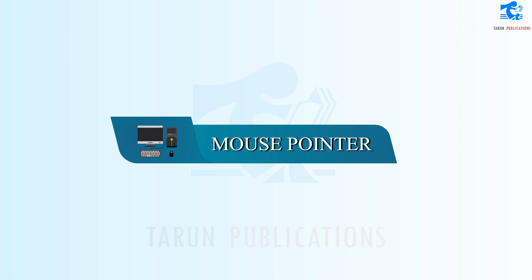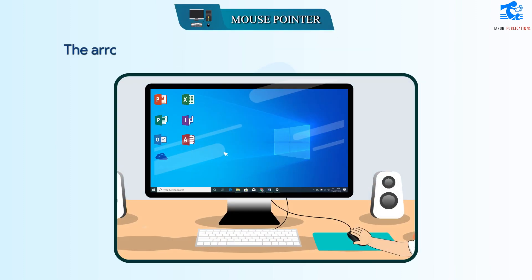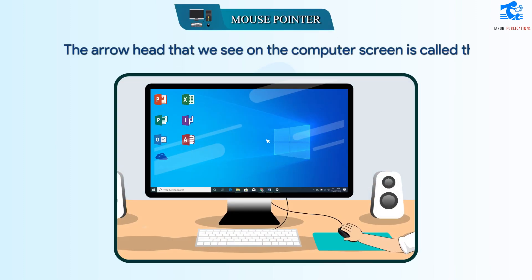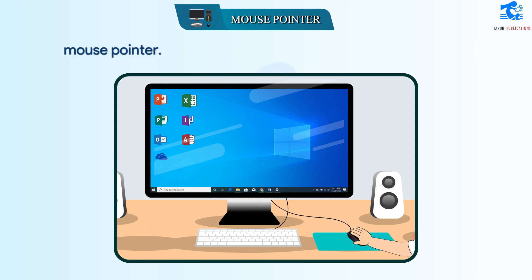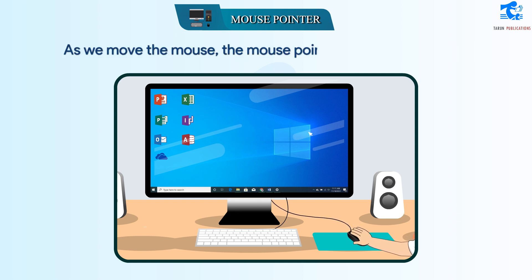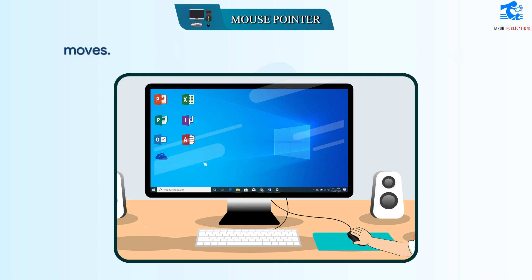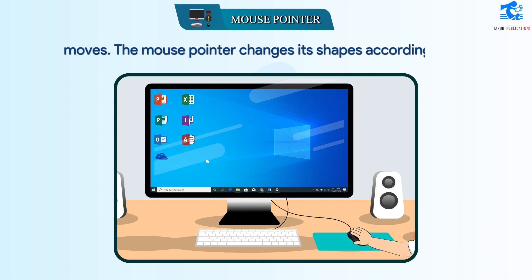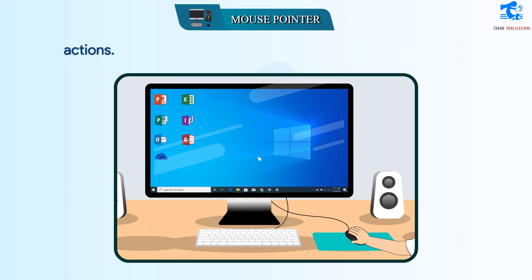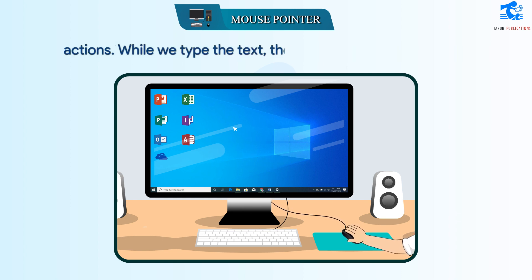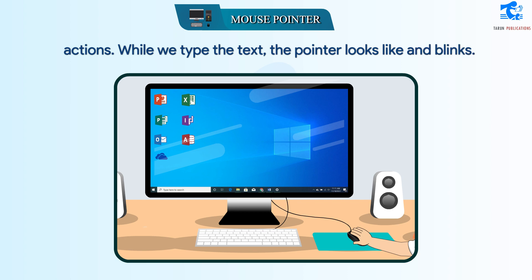Mouse Pointer. The arrowhead that we see on the computer screen is called the Mouse Pointer. As we move the mouse, the mouse pointer on the screen also moves. The mouse pointer changes its shape according to our actions. While we type text, the pointer looks like a cursor and blinks.